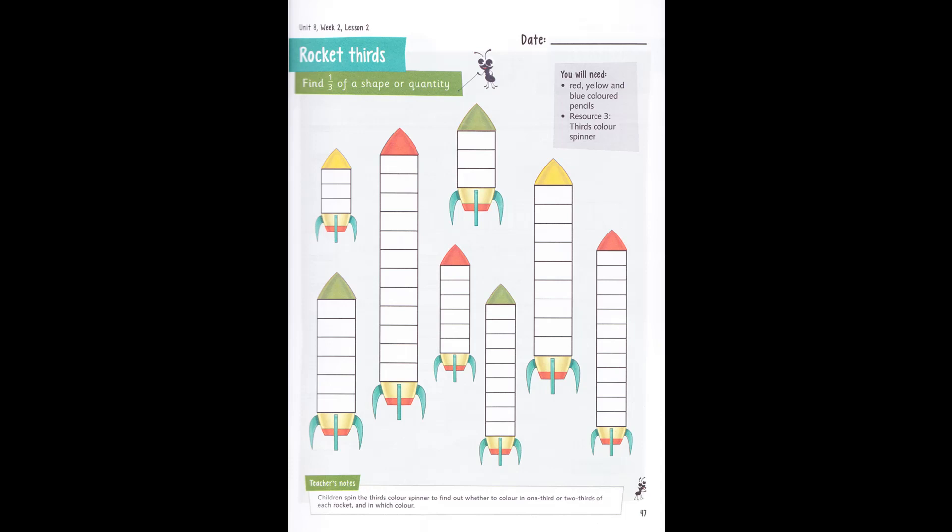To do the spinner game you'll need some help making it, so ask mommy or daddy to help you. You'll also need a pencil and a paperclip or a safety pin. On the workbook page there are pictures of rockets, each divided into parts. What you need to do is color one-third or two-thirds of each rocket either blue, red, or yellow.